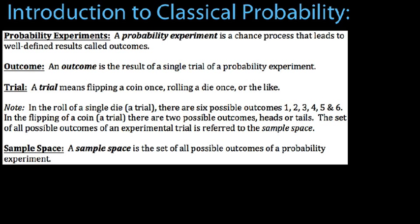There's a lot of vocabulary in this section, so we're going to start by looking at a few terms. A probability experiment is a chance process that leads to well-defined results called outcomes. So I could toss a die — this is an experiment — and it leads to very well-defined outcomes, like 1 through 6. An outcome is the result of a single trial of a probability experiment. For example, rolling a 3 would be the outcome.